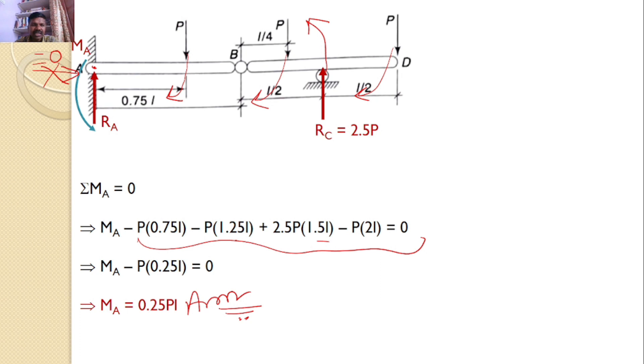And also, I can take another equilibrium equation, sigma Fy is equal to 0. There are 5 forces are acting in the vertical direction, out of which 2 forces are upwards, and 3 forces are downwards.